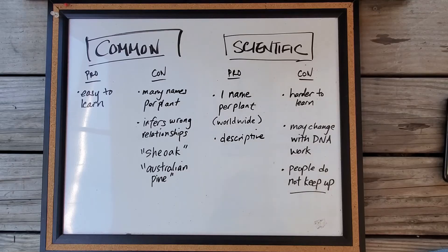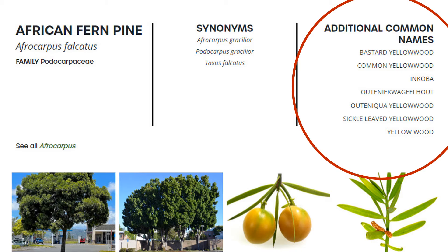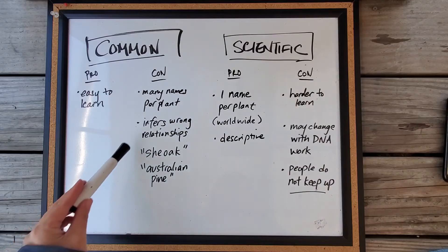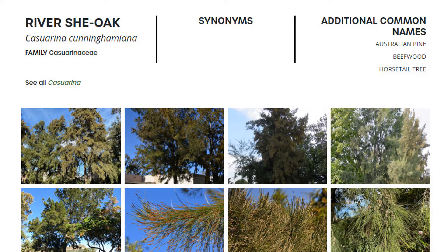Here's a list of the pros and cons of using the common name or the scientific name. With the common name, it's very easy to learn — it's just whatever language you speak. But the problem is that each plant or tree may have multiple common names and there are no rules dictating how a name is given. Some common names also seem to indicate relationships that don't actually exist. For example, 'she oak' and 'Australian pine' both refer to a species in the genus Casuarina.